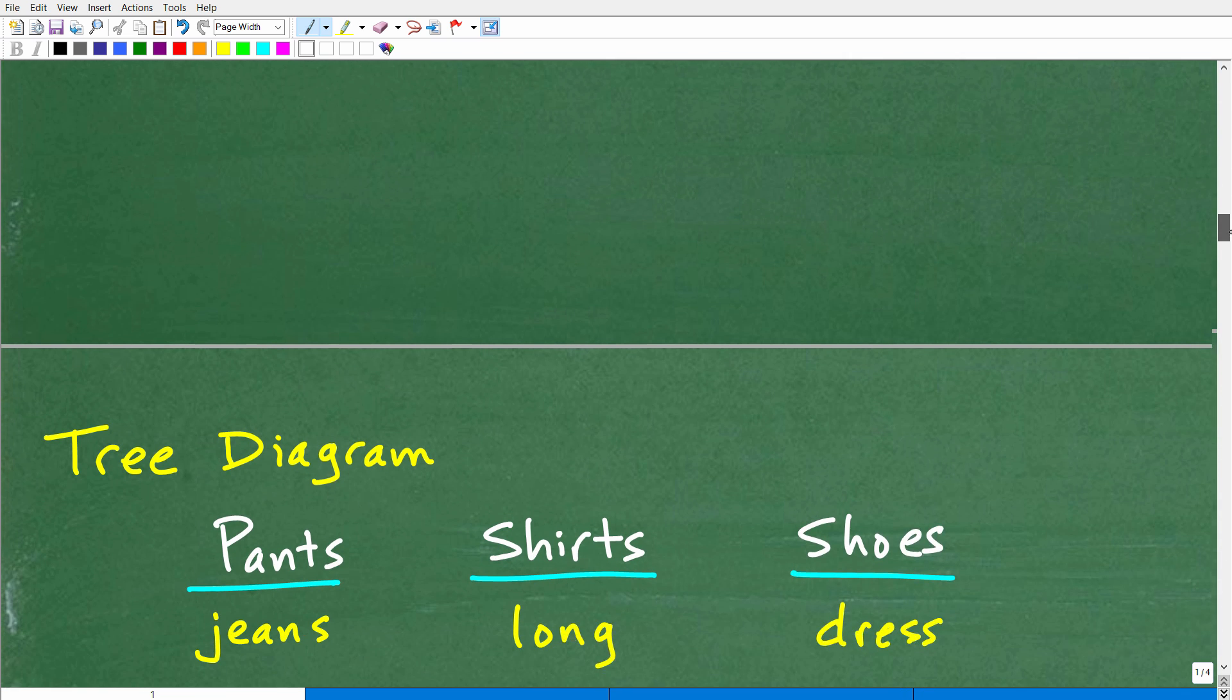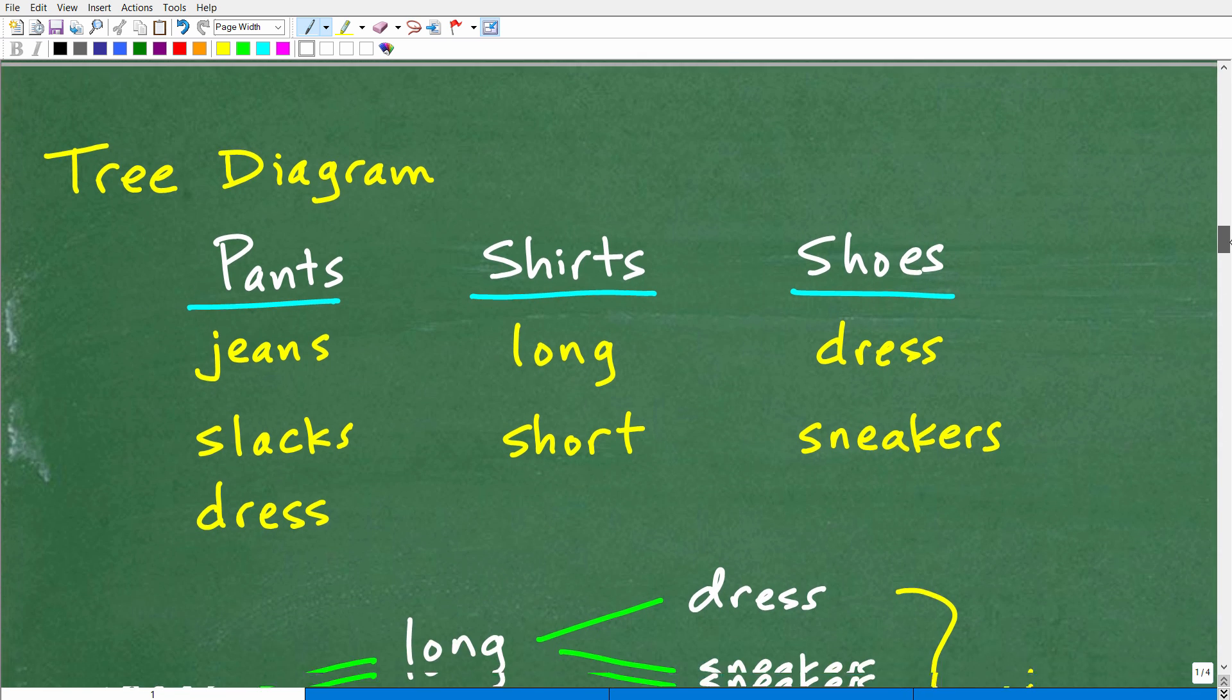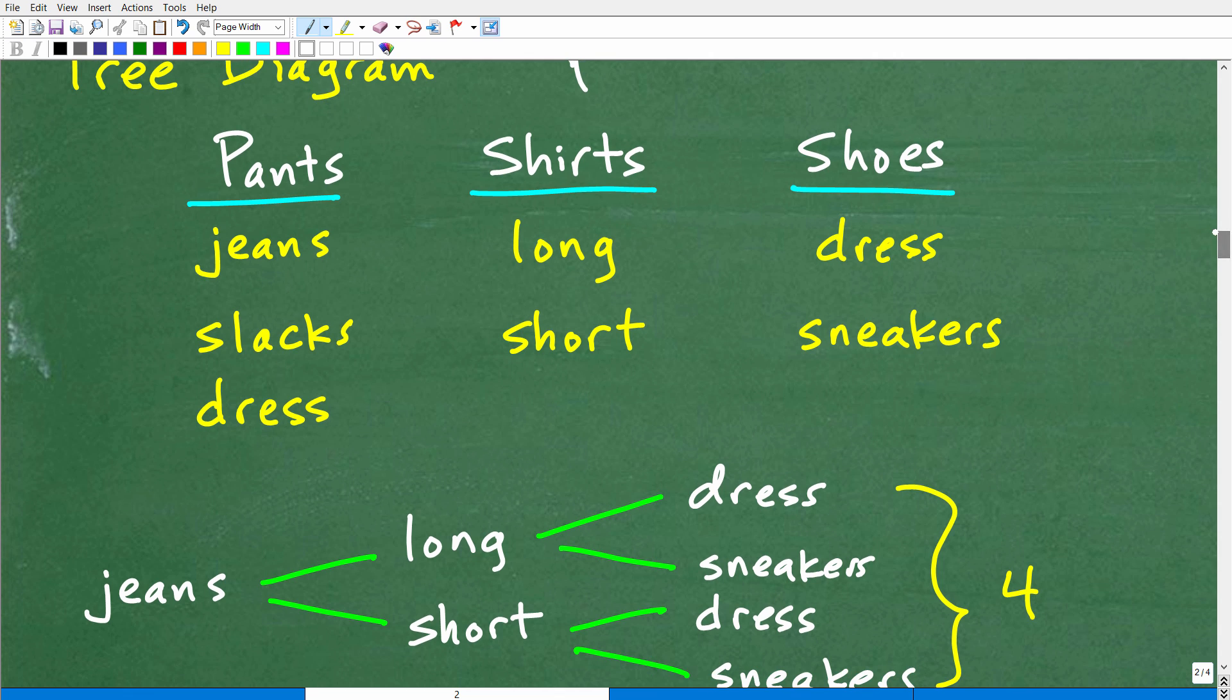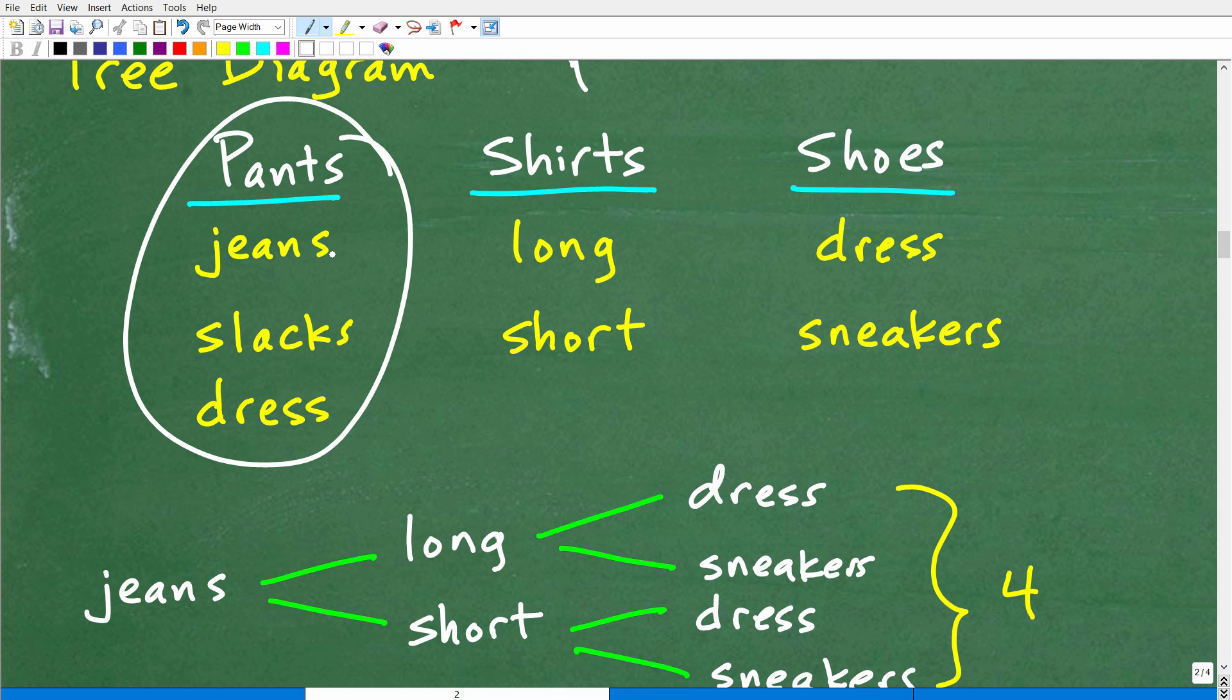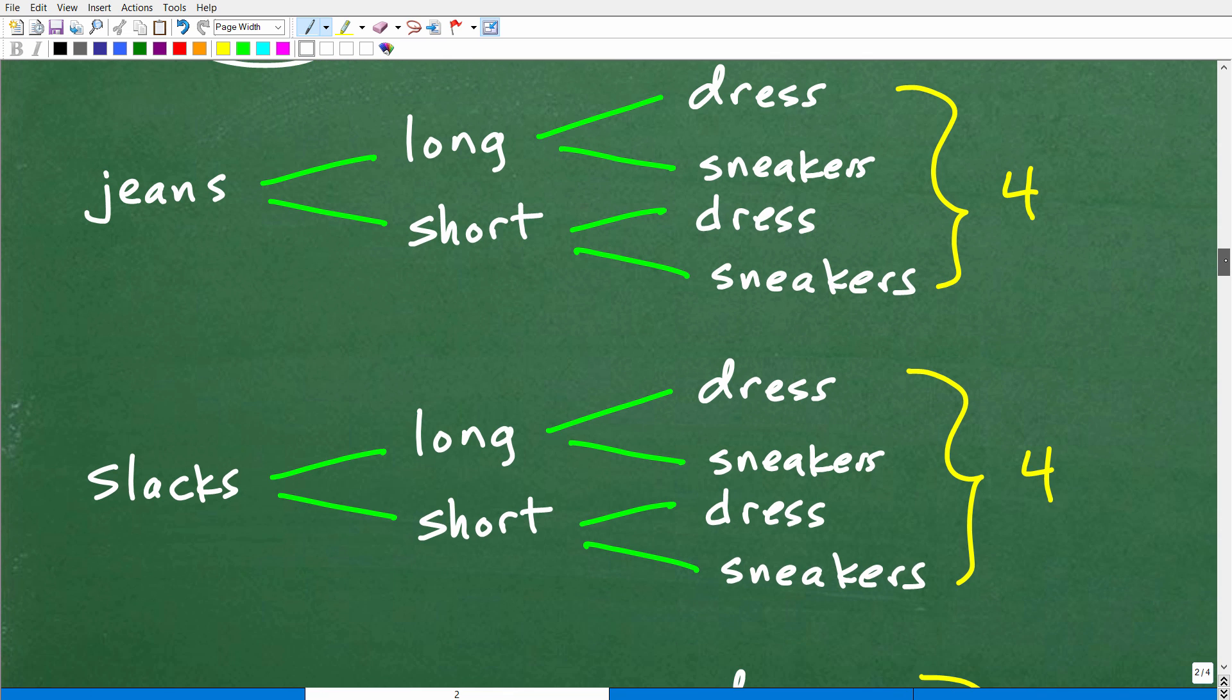All right, let's talk about a tree diagram. So you're saying tree. Are we talking like a tree like this with branches and stuff? Yeah, that's basically the idea. So here's our pants, shirts, and shoes. This is what a tree diagram looks like. We're going to start with pants. And we're going to build out kind of like a trunk and trees. It's probably easier just to show you this. I think a picture's worth a thousand words. It's probably easier to explain this by actually showing you what's going on here.